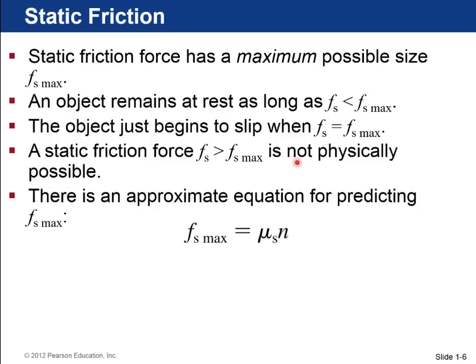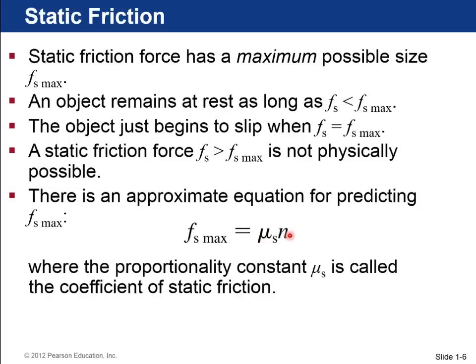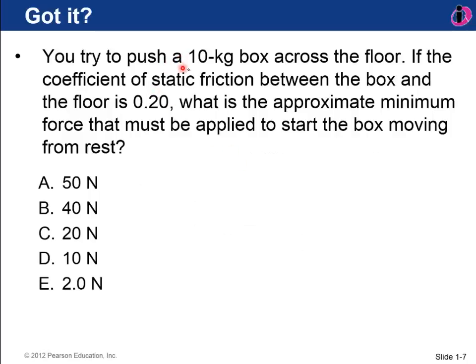Okay, so there's an approximate equation for predicting Fs max, and it's based on the normal force. So the greater the normal force measurements show, the greater this maximum static friction force. And remember, that's because those two surfaces, the shapes there are locking together a little better if you push them more. And there's a new proportionality constant here called mu, mu sub s. That's the coefficient of static friction. That's just a dimensionless number that relates the size of the maximum static friction to the normal force. So let's see if you can do this calculation. If you try to push a 10 kilogram box, and the coefficient of static friction between the box and the floor is 0.20, what's the approximate minimum force that you would have to apply in order to just get the box moving from rest? So take a pause, maybe whip out some paper, or try to do this, and then I'll tell you the answer.